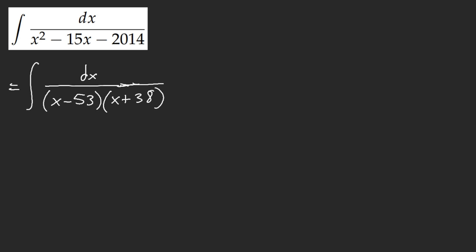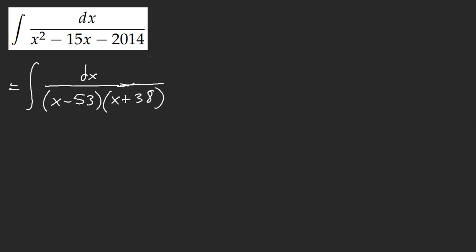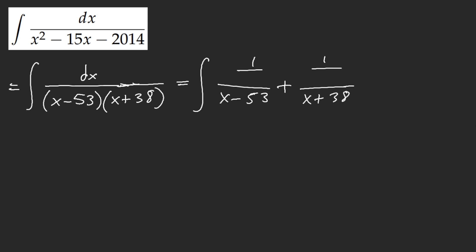How was I supposed to know this? Ugh, horrid, god-awful. So now we go ahead and do partial fractions. Using the Heaviside method with x plus 38 — plugging in x = 53, I get 91. And plugging in x = negative 38, also negative 91. See how nasty this is?